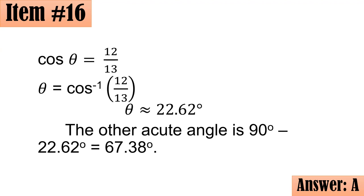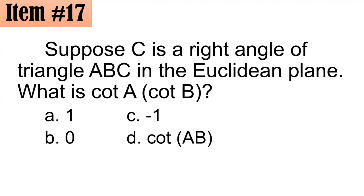Number 17. Suppose C is a right triangle of triangle ABC in the Euclidean plane. What is cotangent A times cotangent B? Is it A, 1, B, 0, C, negative 1, or D, cotangent AB? One daw, ang sabi ni teacher Marnie, ganun din sabi ni Sir Sadie.